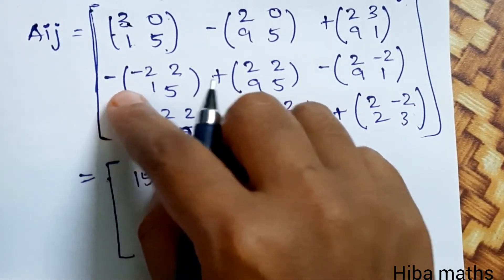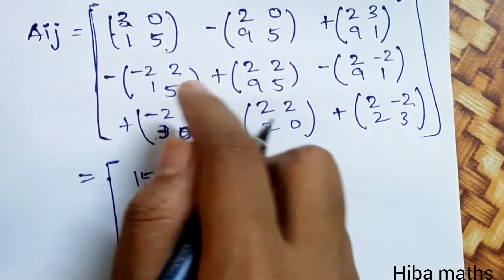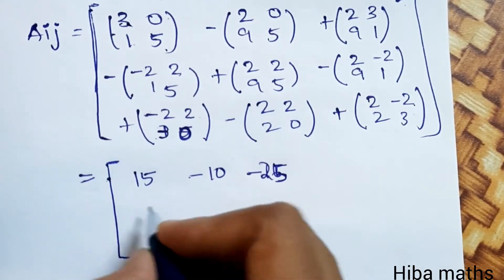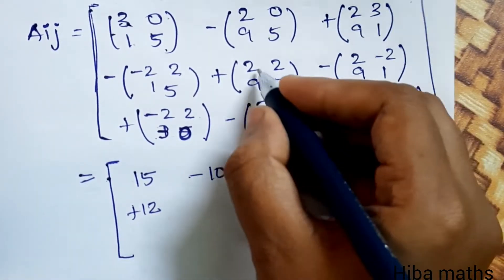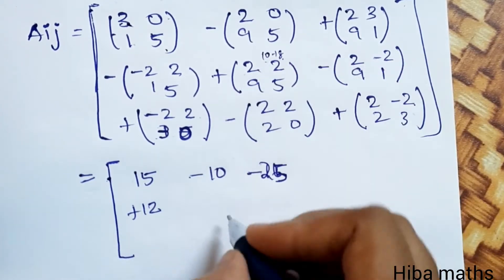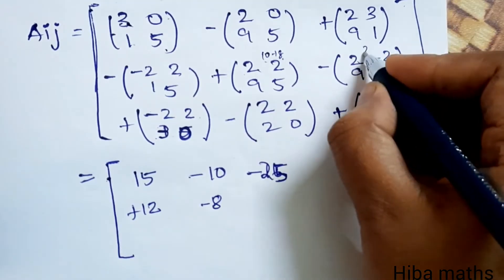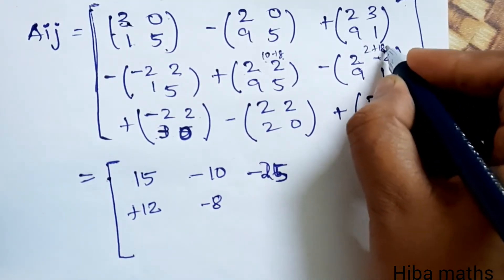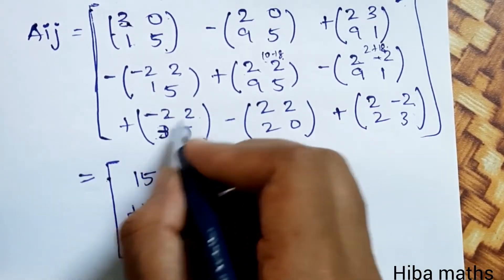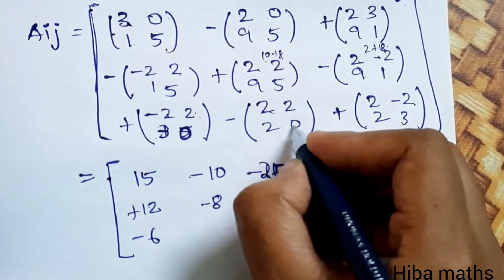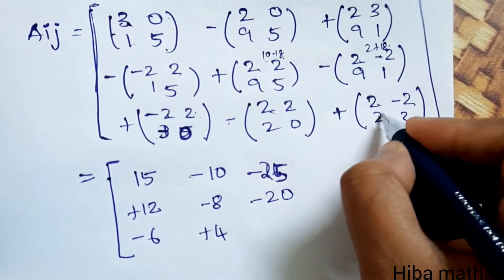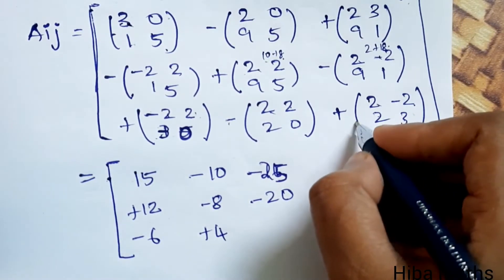Computing the cofactor values: minus 25, minus 10, minus 12; then minus 12, 5 times 2 are 10; minus 18, minus 8; 2 ones are 2 plus 18 equals 20, so minus 20; then 0, minus 6, 0, minus 4; minus plus 4, 6 plus 4 plus 10.